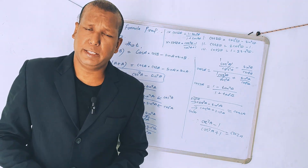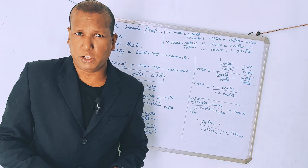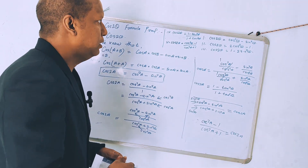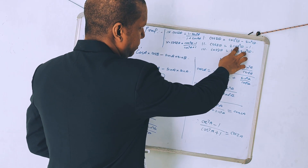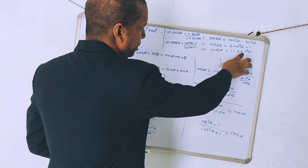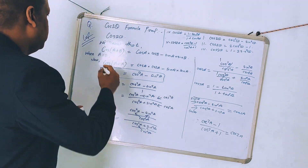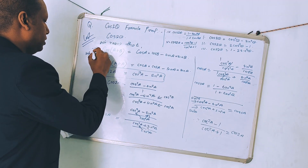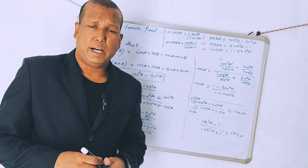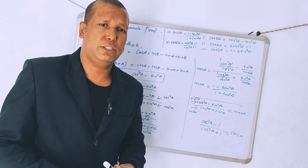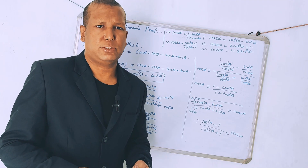So this is how we can get the value or the formula of cos 2θ in the form of cos² A - sin² A, in the form of cos, in the form of sin, in the form of tan, and in the form of cot. You only need to remember the important base formula, and then you can derive all of these. I hope you liked this video. Thanks for watching, see you next week!